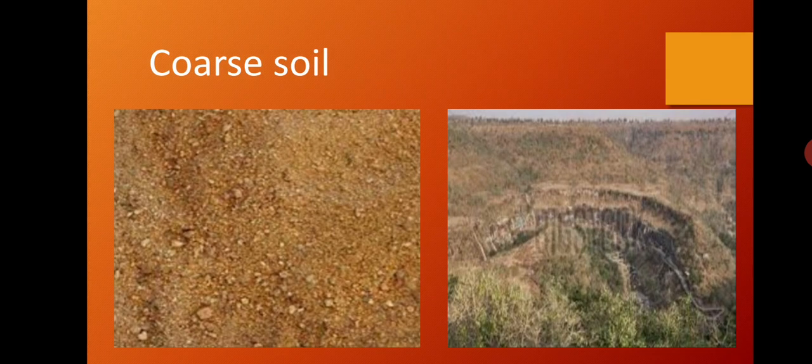Coarse soil: this soil type is a result of weathering and low rainfall. It can be found on the hilltops of the western part of the plateau — for example, Ajanta and Mahadev hills. The proportion of humus is negligible in this soil.